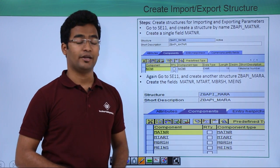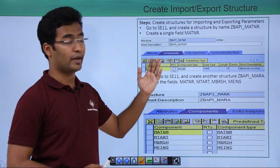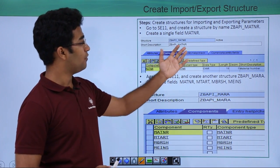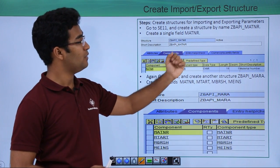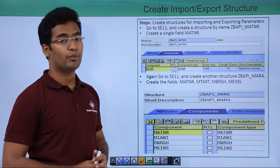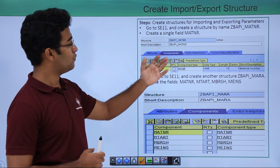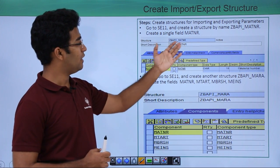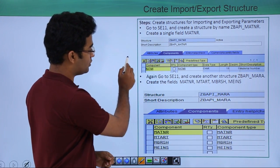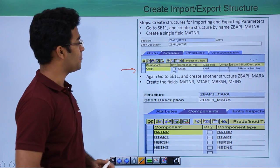First we have to create our import and export structures. For that we have to go to our ABAP dictionary and we will create a structure with the name ZBAPI_MATNER. Here we have made a structure with a particular field name, that is MATNER.